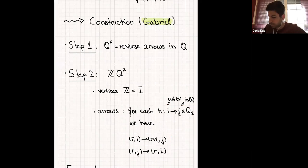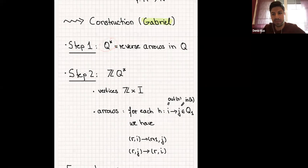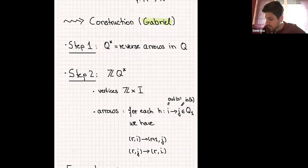The second arrow, where r is fixed: when you have an arrow from i to j, you draw an arrow from j to i — basically meaning you have Q* sitting at each copy. The first type of arrow consists of connecting arrows from r to r+1: if you have an arrow from i to j, you draw an arrow again from i to j but connecting r and r+1.